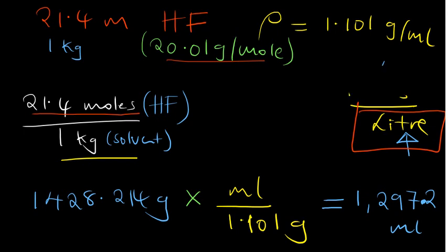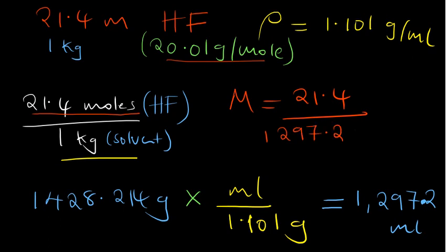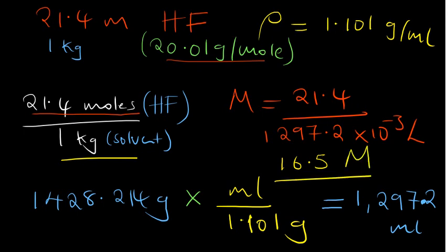Now we're ready to find the molar concentration. The number of moles is 21.4 moles. The volume is 1297.2 milliliters, which we convert to liters by dividing by 1000. Dividing 21.4 moles by 1.2972 liters gives a molar concentration of 16.5 M. This demonstrates how to convert from molal concentration to molar concentration by carefully tracking the units.